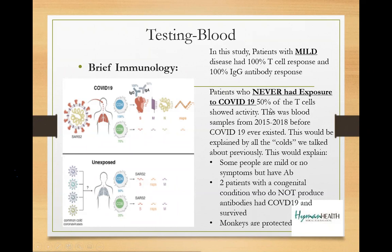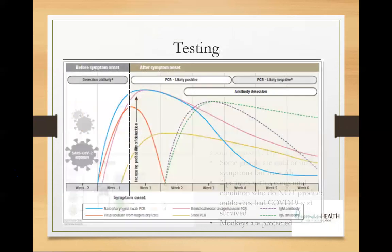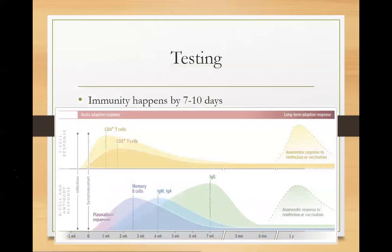Patients who never had exposure to COVID: one lab took blood from 2015 and 2018 — before COVID-19 ever existed — and 50% of them had T cell activity. How is that possible? Because of overlap from those common cold coronaviruses. When you're thinking about the timeline: after exposure, the incubation period passes, then antibodies start going up and then come down while symptoms go up and then resolve. Cellular immunity typically develops around seven to ten days. Probably around 40–45% of people have had it and don't even know it.